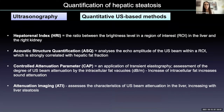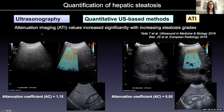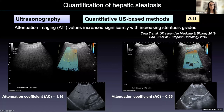The major problem with using MR for fat quantification is its high cost. Several ultrasound-based techniques were developed for quantifying liver steatosis. Among these, I want to highlight attenuation imaging, now available in many ultrasound systems. The ATI values increase with increasing steatosis rates — the attenuation coefficient is higher in patients with severe steatosis than in those with no liver steatosis.